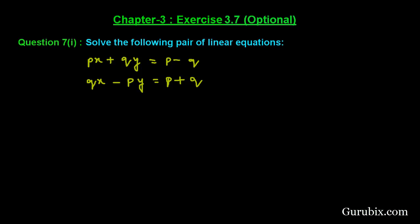Welcome friends, let us solve the first part of question number 7 of exercise 3.7 of chapter 3. The question says: solve the following pair of linear equations, where p and q are constants and x and y are variables. We can apply either substitution, elimination, or cross multiplication method. We shall solve this pair of linear equations using the cross multiplication method.